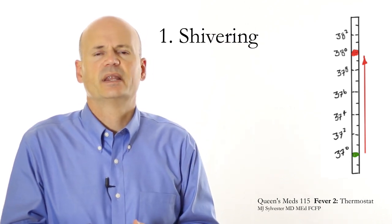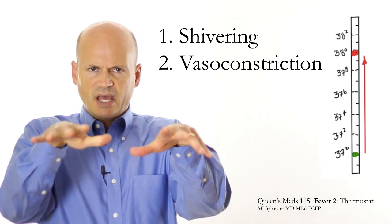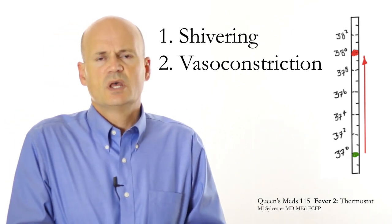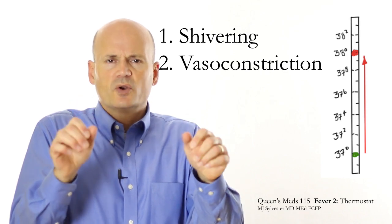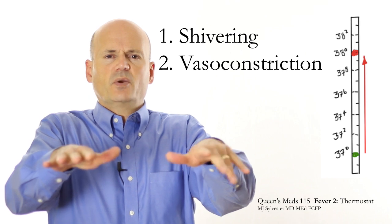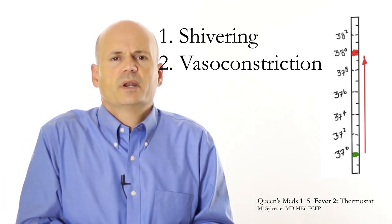The other method it has to generate heat is by vasoconstriction. That's the blood vessels at your periphery, in your hands, and your arms, and your legs, and your toes. They can all shrink down in order to shunt that warm blood into your core, rather than leaving it out at the periphery where it cools off. Shunt that blood into the core to keep the core of your body warmer.